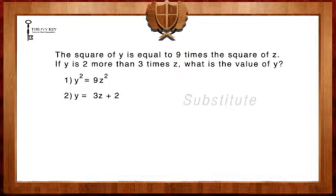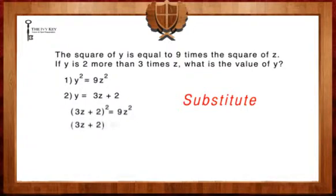The next step is going to be to substitute 3z plus 2 for y in our first equation. The equation now reads, 3z plus 2 squared equals 9z squared. We're going to want to remember that 3z plus 2 squared can be rewritten as 3z plus 2 times 3z plus 2 equals 9z squared.